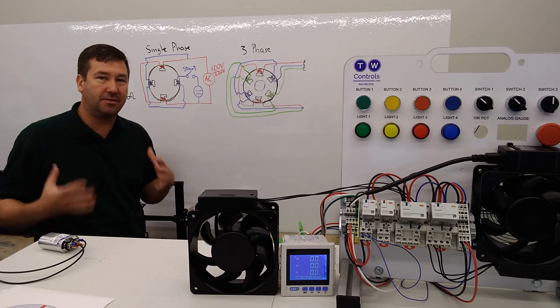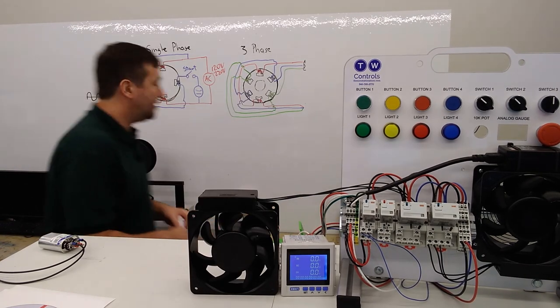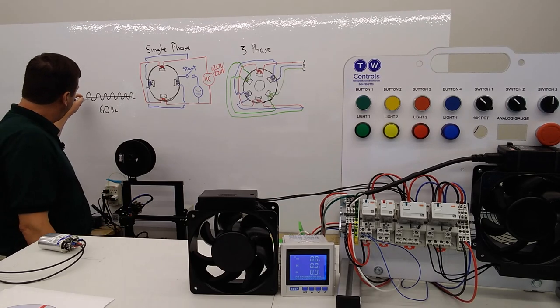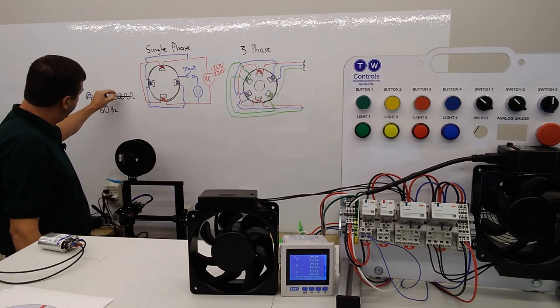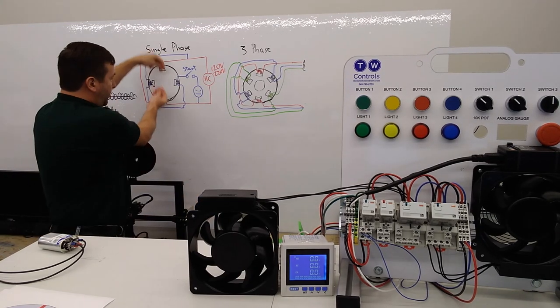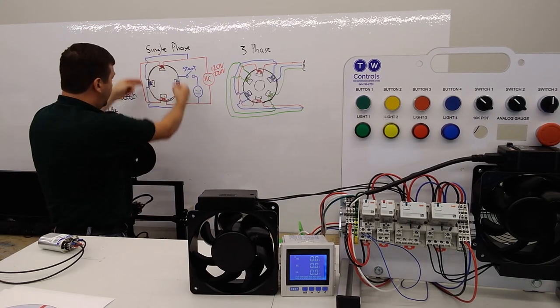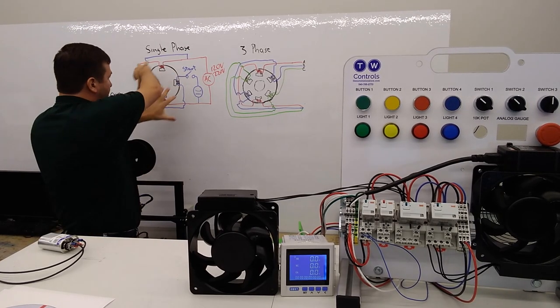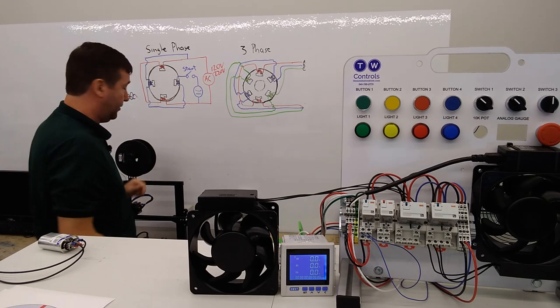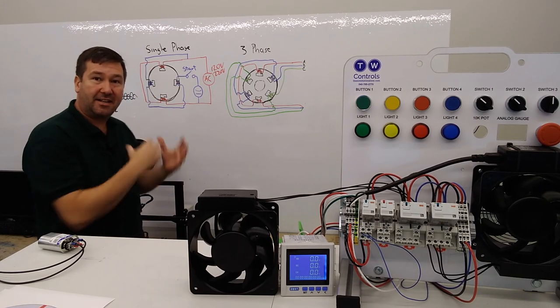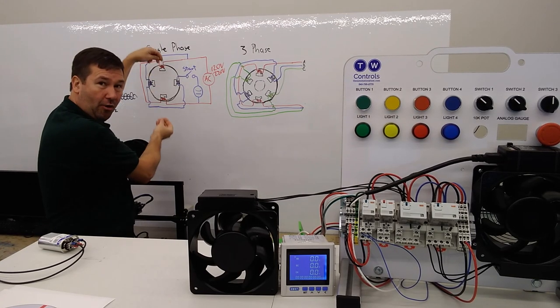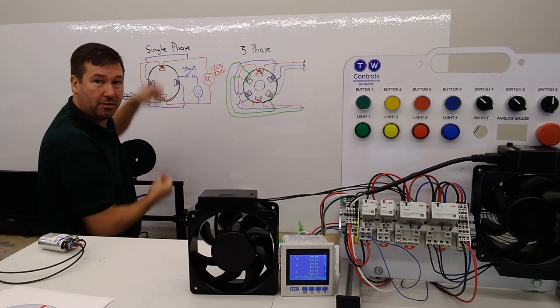And then it's going to go through this capacitor. And I'm not going to get deep into how this works, but mainly this is going to shift the sine wave on the secondary. So it's going to look something like this. So you have this one doing positive, negative, positive, negative, and you have this one doing positive, negative. And what that's going to do is it's going to make a rotating magnetic field, and that is how it's going to get the motor started. Now once the motor is rolling, then this tug of war actually will keep that motor spinning.